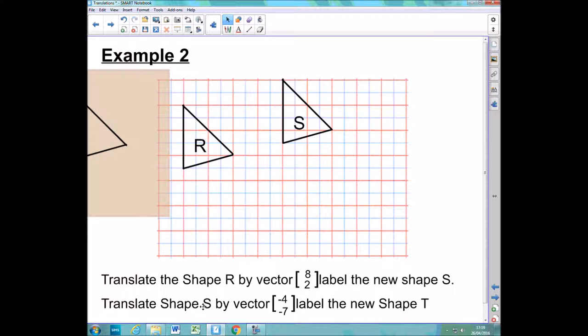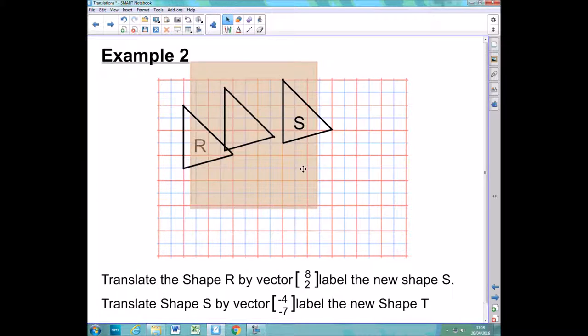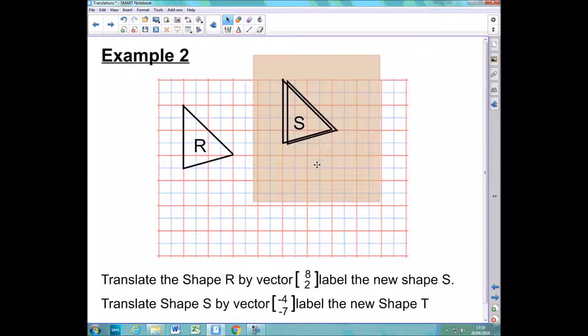So the next question here is asking me to translate this shape S, and I'm asked to translate this by a vector of minus four, minus seven and label the new shape T. So again, I'm going to get my tracing paper. It's the same shape, so I can use the same bit of tracing paper.